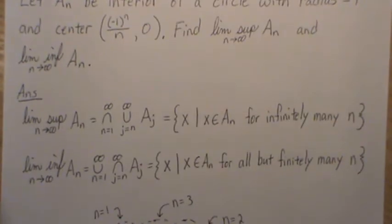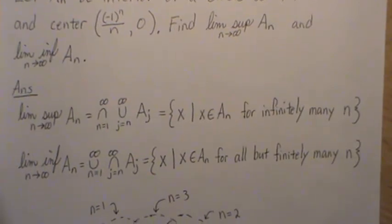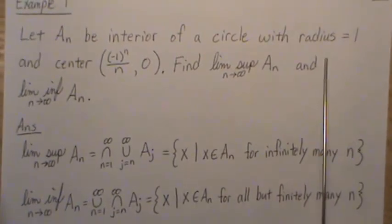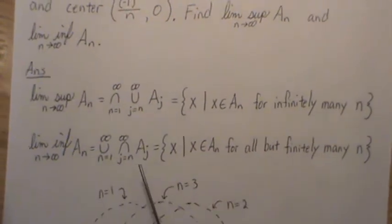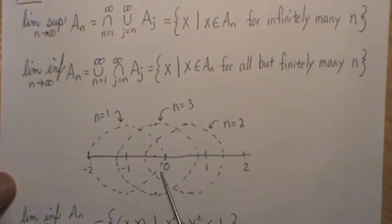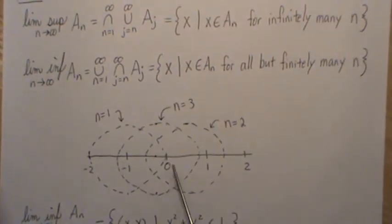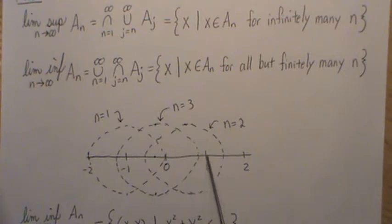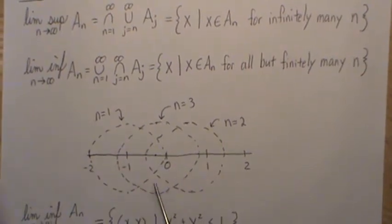The limit infimum is usually the union of intersections of the sets, but here x has to eventually be in all of the sets for some large n — another way to say that is 'for all but finitely many n.' So remember the radius is 1 and centered at (-1)^n / n: when n=1 the center is -1, when n=2 it's 1/2, when n=3 it's -1/2. So the circles oscillate back and forth, converging toward being centered at zero as n goes to infinity, but always slightly back and forth.